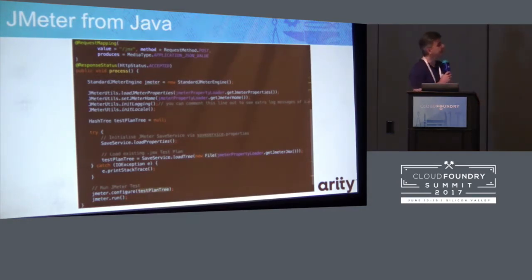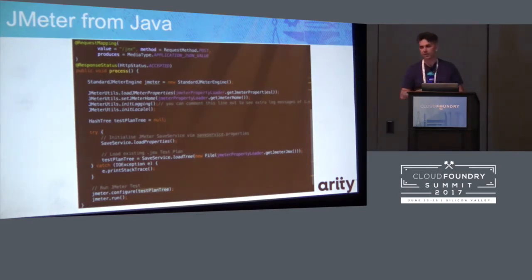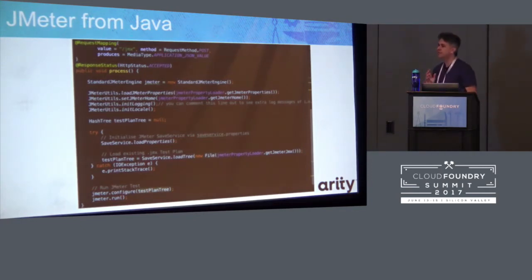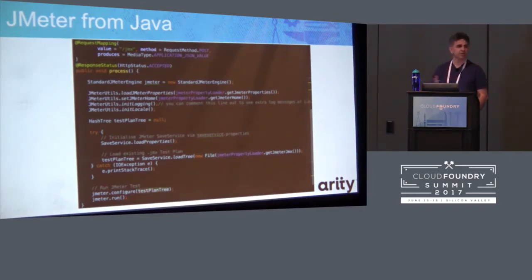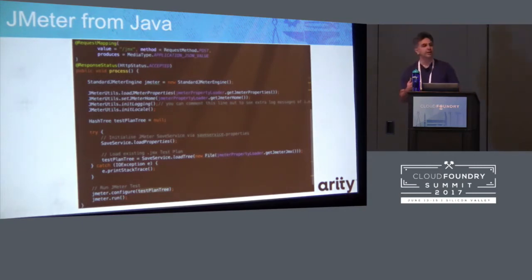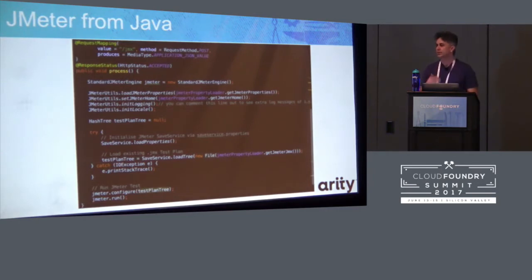Thankfully, there are now much neater ways to achieve the same thing. As of PCF 1.7, you can use a CF curl command to retrieve information about the IP addresses of the instances, and then pull those IP addresses out and do exactly the same thing in a far more sensible way. That allows you to do the scaling within Cloud Foundry, rather than having to push up 5, 10, or 20 apps under different names.